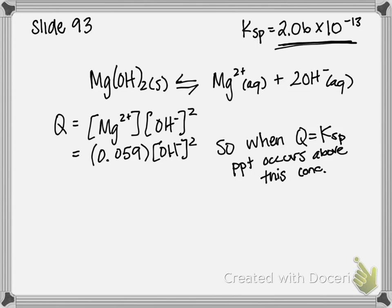So I'm going to set Ksp, which is equal to 2.06 times 10 to the negative 13. I'm going to set that equal to my expression.